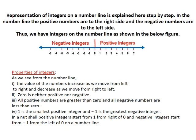All positive numbers are greater than 0 and all negative numbers are less than 0. 1 is the smallest positive integer and minus 1 is the greatest negative integer. In a nutshell, positive integers start from 1 from right of 0 and negative integers start from minus 1 from the left of 0 on a number line.